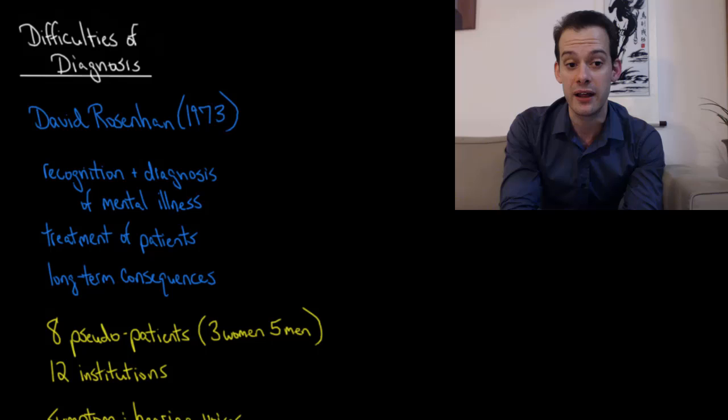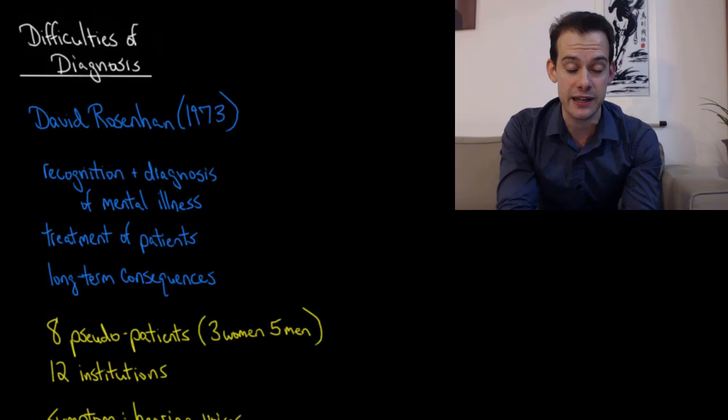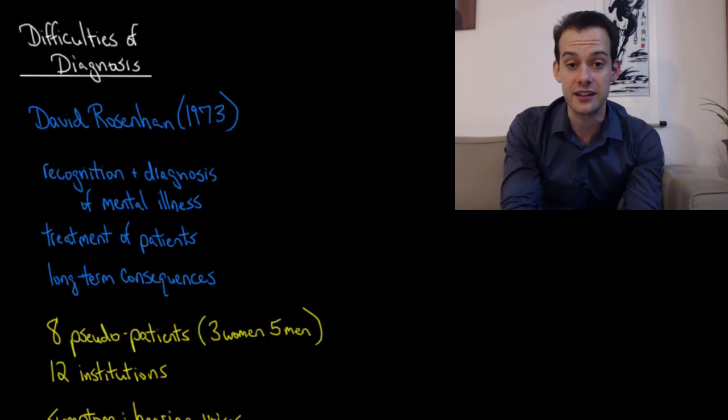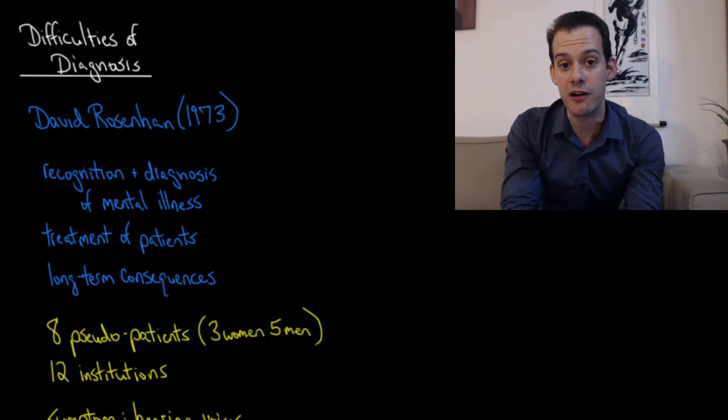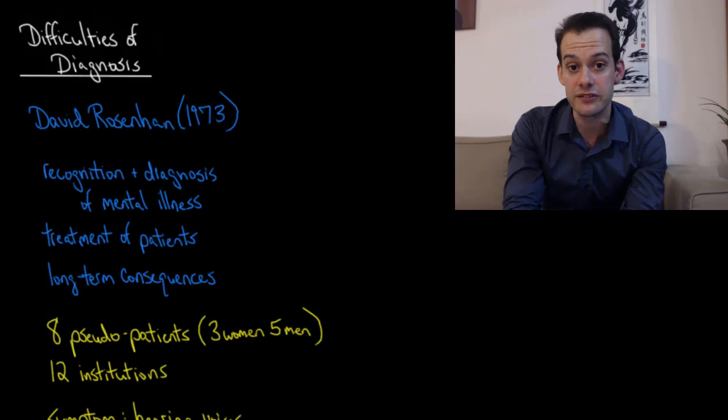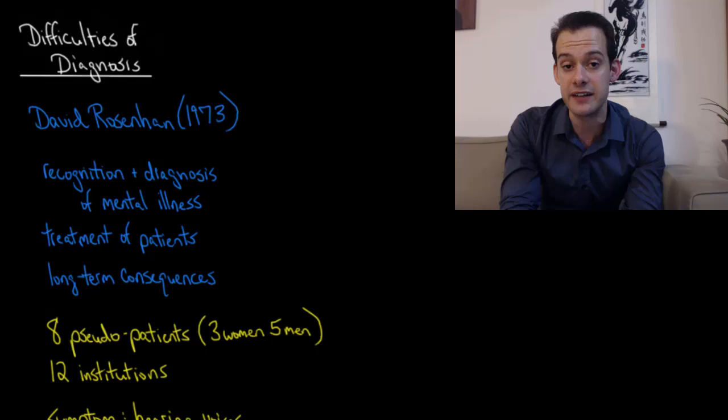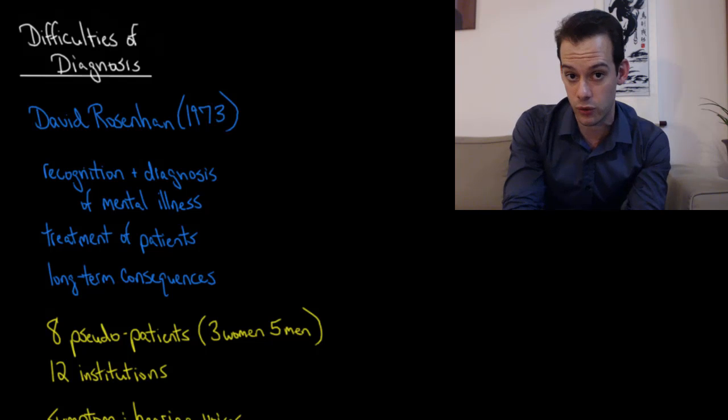This is a study conducted by David Rosenhan titled Being Sane in Insane Places, published in 1973. When this paper was published it sent shockwaves through the mental health community because it pointed out a number of problems associated with the recognition and diagnosis of mental illness by psychiatrists. It raised issues related to the treatment that patients received in institutions and the potential long-term consequences of receiving a diagnosis of a psychological disorder.